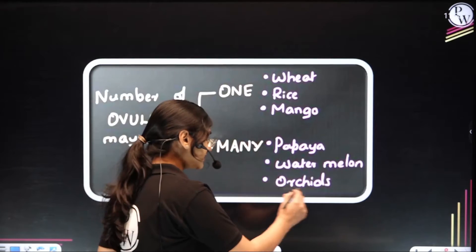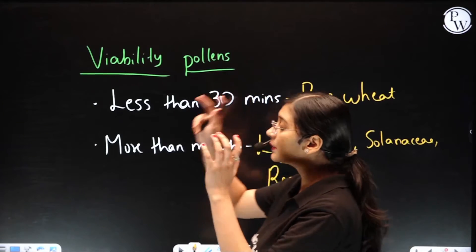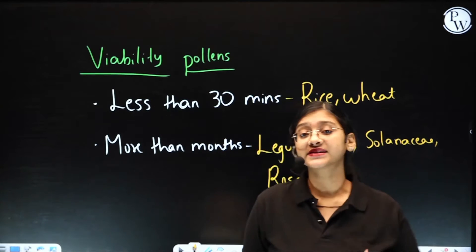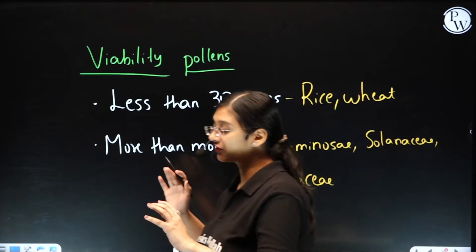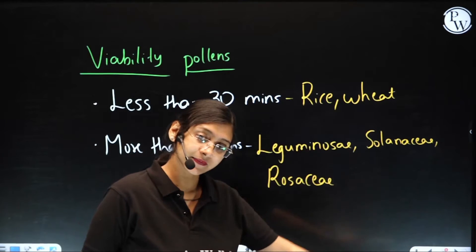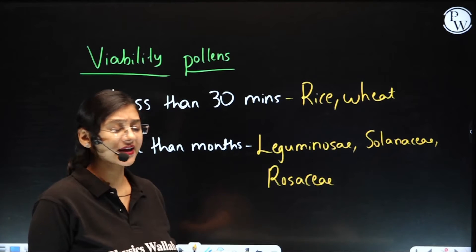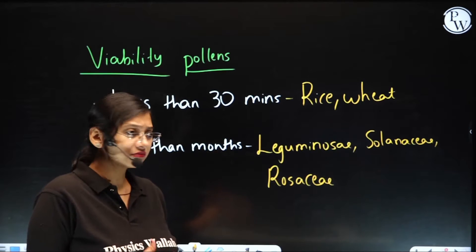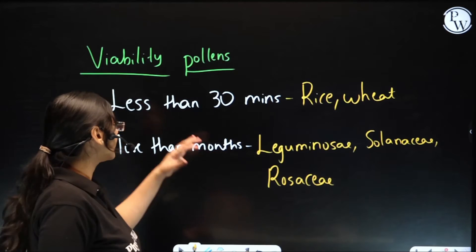Moving further — viability of pollens. What is the meaning of viability? Viability means ability to germinate. So there are different types of pollen grains which will be able to show different viability. Some of them would be having very good viability, which means the pollen grains can be germinated even after months.